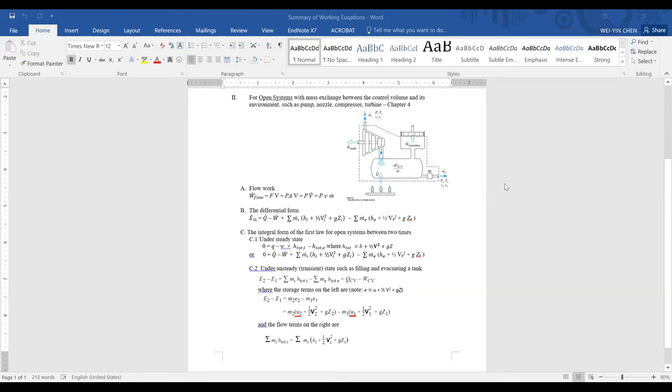Chapter 4 deals with two types of open systems. One is fluid passing a control volume in the steady state, and the second type is transient state,